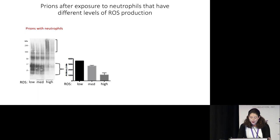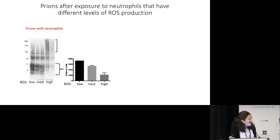What I found is that neutrophils that were better at producing ROS disinfectants were better able to change the prions in a way we know correlates to reduced infectivity. Along the bottom you can see ROS production — low, medium, and high. As that ROS production gets higher, we have a more significant change in that laddering pattern, which represents the prions.